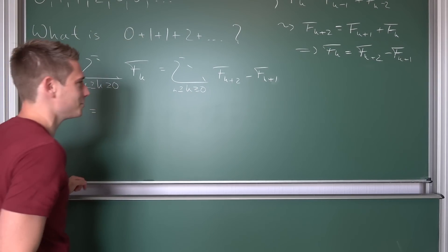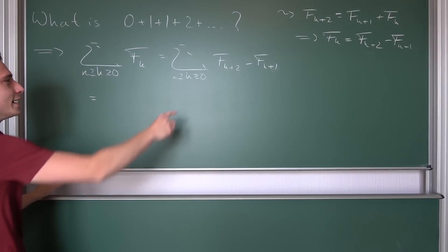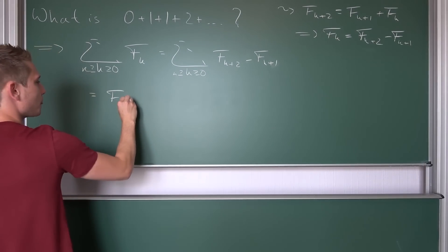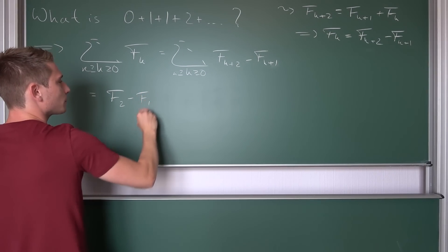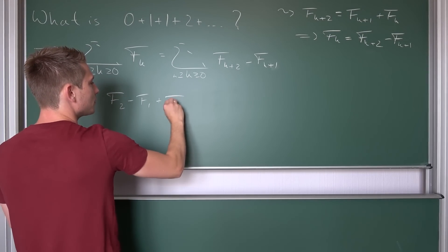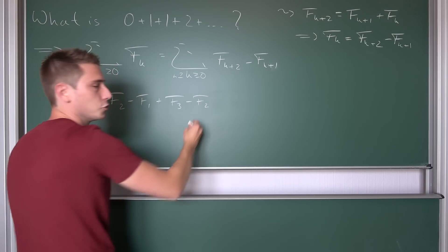Now we can start computing and see if we can find a certain nice pattern. We are going to do so. Let's plug it in with 0. We are going to get, plug 0 into here. This is F2 minus F1. Next up, plug 1 into here. It's going to give us plus F3 minus F2.